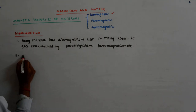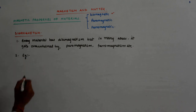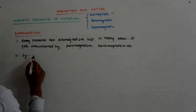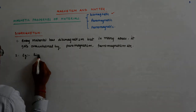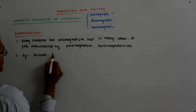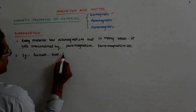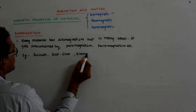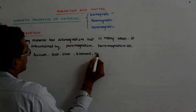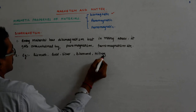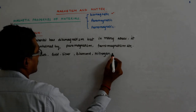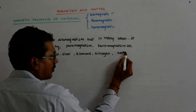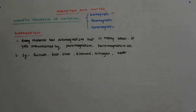Some examples of diamagnetic materials: Bismuth, gold, silver, diamond, nitrogen, and water — water is also diamagnetic.